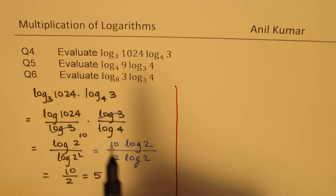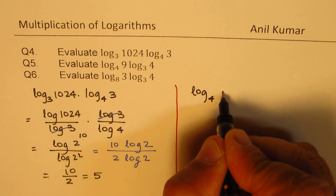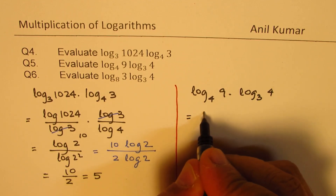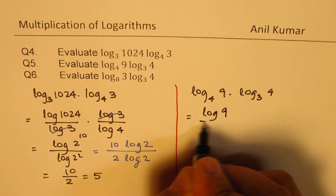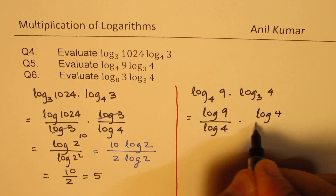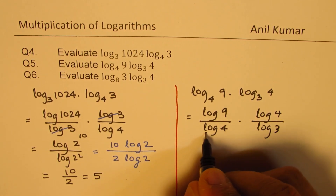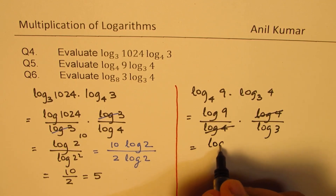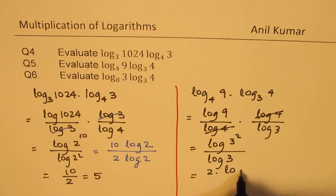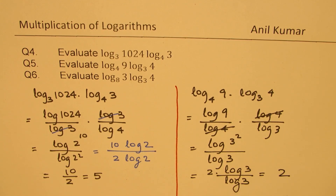Similarly, question number five is log to the base 4 of 9 times log to the base 3 of 4. We write this as log base 10 of 9 over log base 10 of 4, times log base 10 of 4 over log base 10 of 3. The log base 10 of 4 terms cancel, leaving log base 10 of 9 over log base 10 of 3. Since 9 is 3 squared, this becomes 2 times log base 10 of 3 over log base 10 of 3, which equals 2.